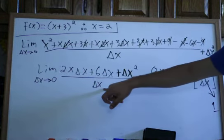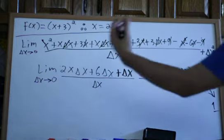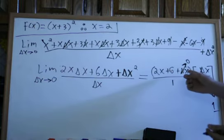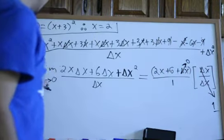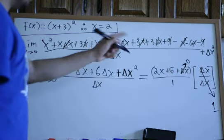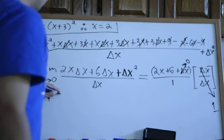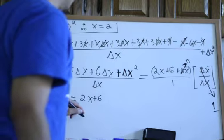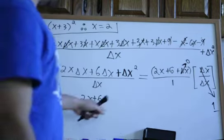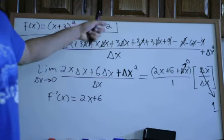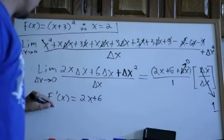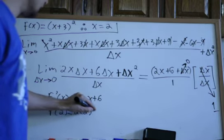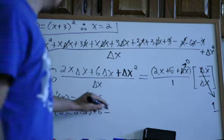Now we can evaluate the limit because there's no delta x in the denominator anymore. We plug in zero for delta x, which gives zero. So f prime of x equals 2x + 6. We wanted x equal to 2, so f prime of 2 equals 2 times 2 plus 6, which equals 10.